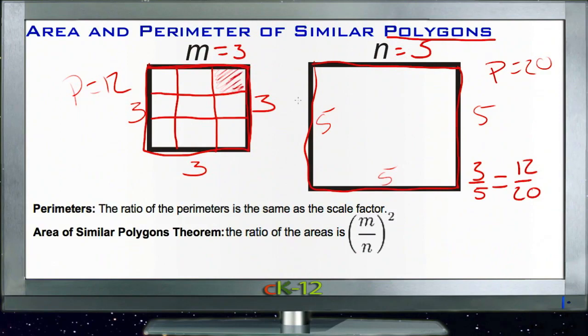So our ratio, then, will be the difference of the squares of the two numbers. Whereas instead of having three to five, our ratio here would be nine to 25, which is not the same as three out of five.